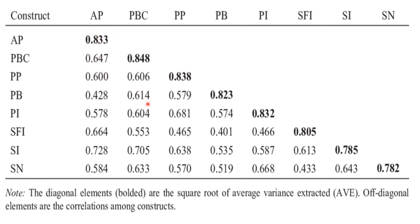So we can say that discriminant validity is being fulfilled. However, if these off-diagonal values are greater than the square root of average variance extracted, that means there is no discriminant validity — those constructs are indiscriminate to each other. Discriminant validity criteria is fulfilled only if these correlation values are lesser than the diagonal square root of AVE value.